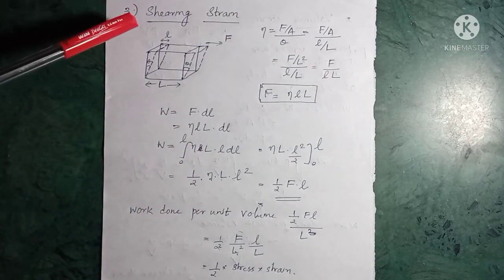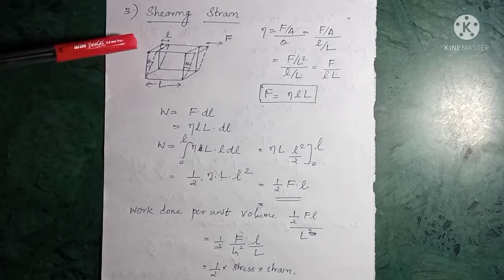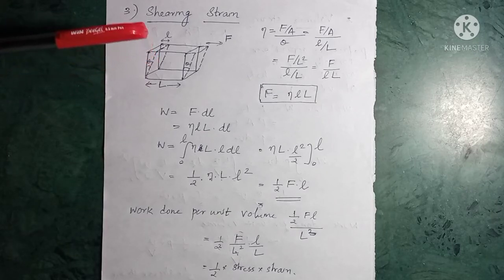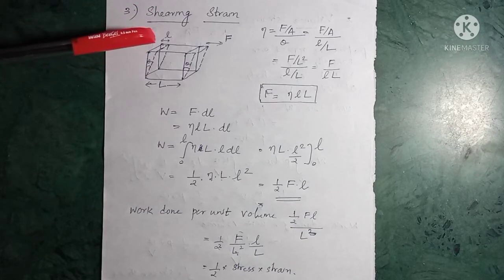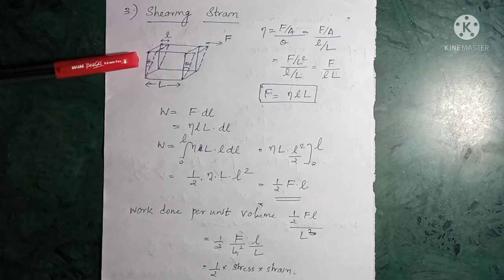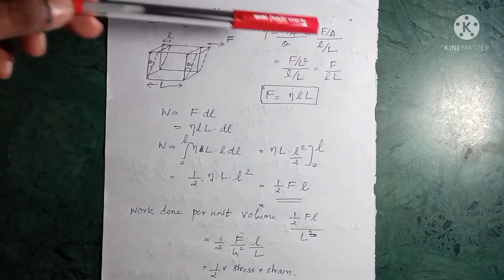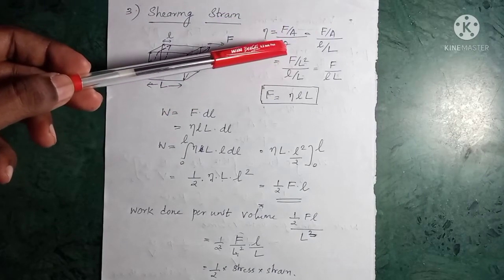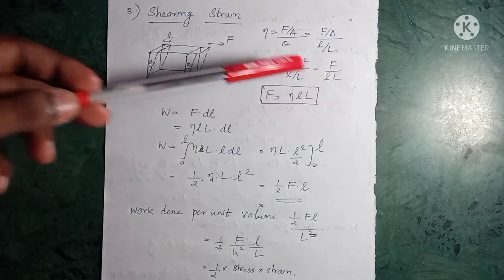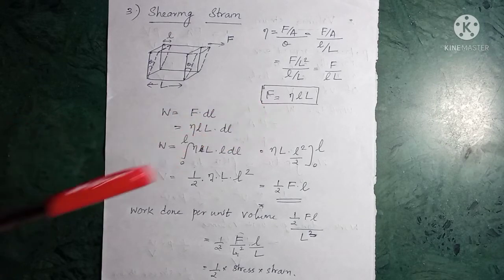The third case is shearing strain. We consider a cube with its base fixed to a surface. A tangential force is applied on the upper surface, causing a deformation that shifts the upper surface by a small distance small l. The shearing angle is theta. The rigidity modulus η is stress divided by strain: (F/A) divided by theta, where theta equals l/L. For a cube, area A = L², so force F equals η × l × L.